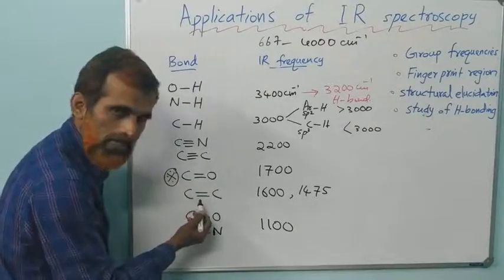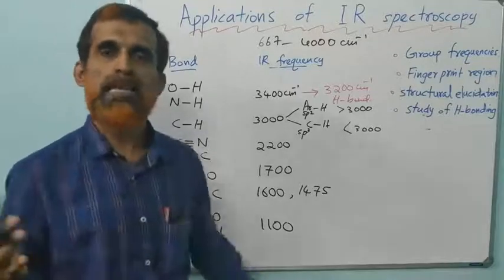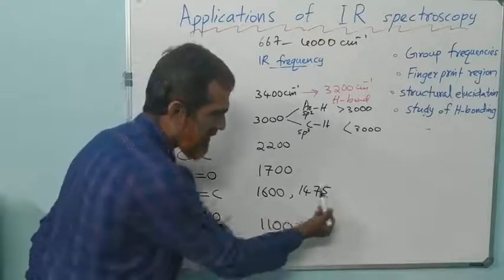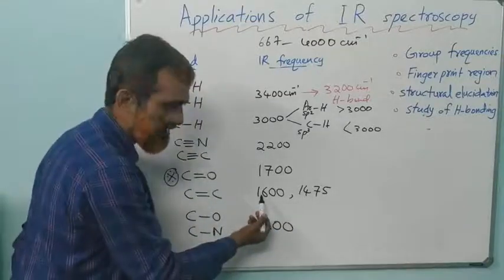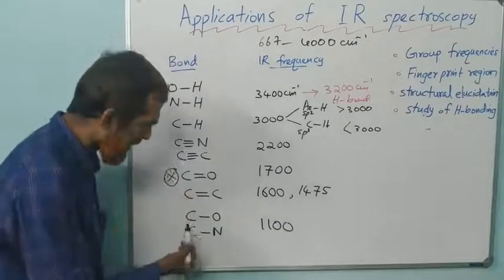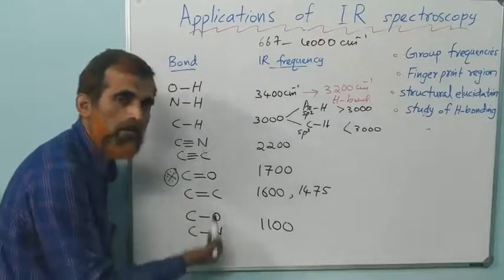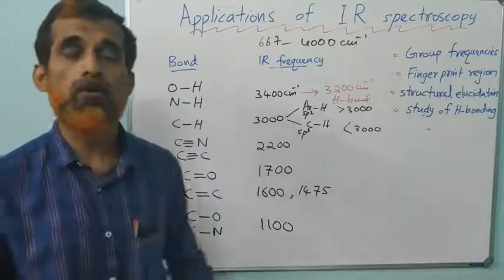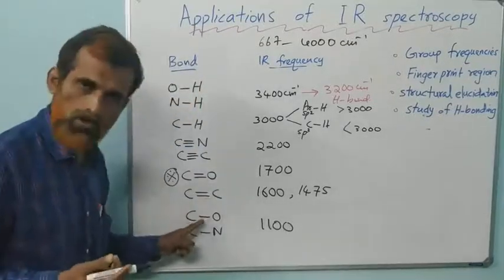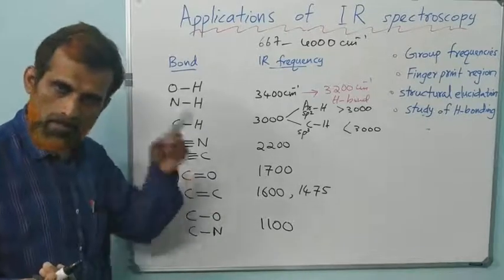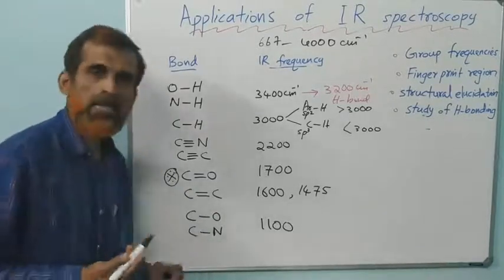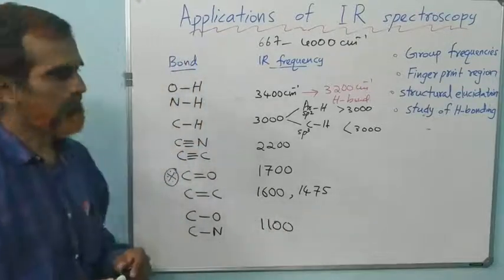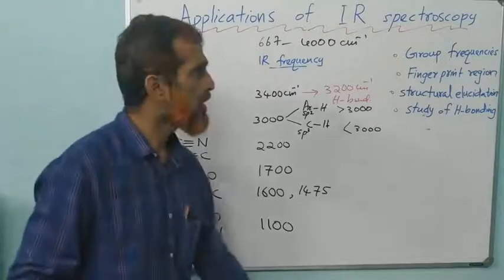Then C double bond C, carbon-carbon double bonds which come in alkenes and aromatic rings will give stretching frequency values. Two peaks you get around 1600 and 1475. Finally, C single bond O and C single bond N. C single bond O comes in alcohols, ethers, carboxylic acids. C single bond N comes in amines. Their value is very low, around 1100. That's about group frequencies. This is an important part of the application of IR because noting these values we can predict the presence or absence of a particular functional group.